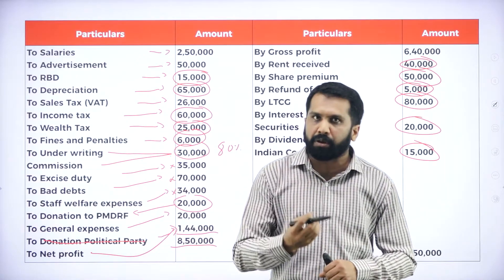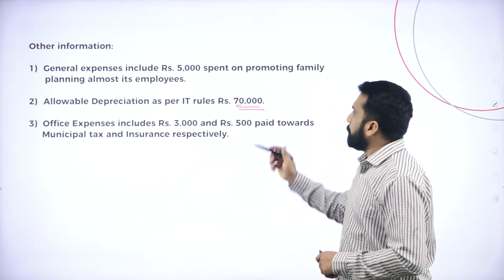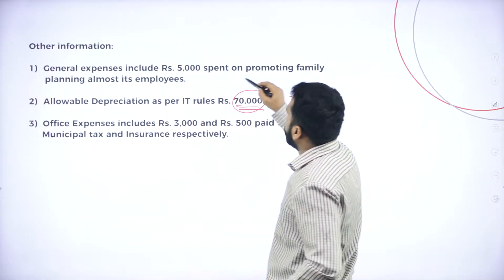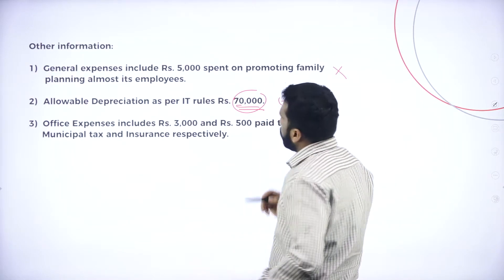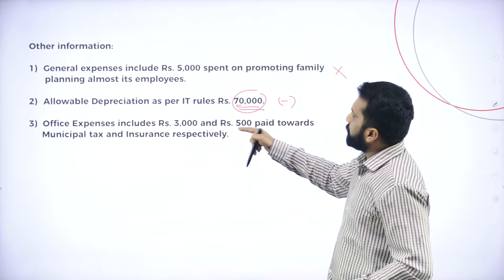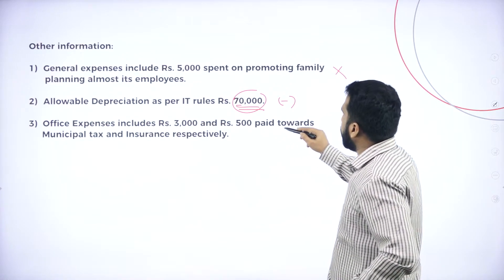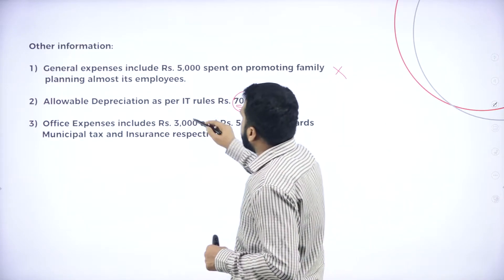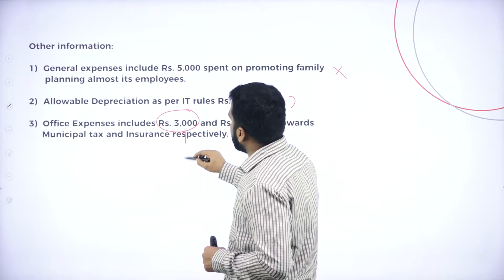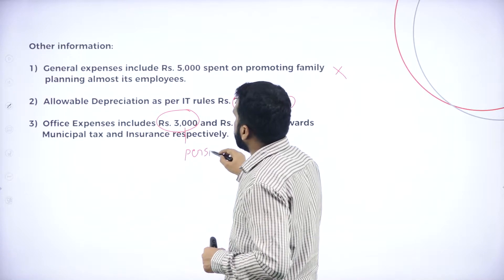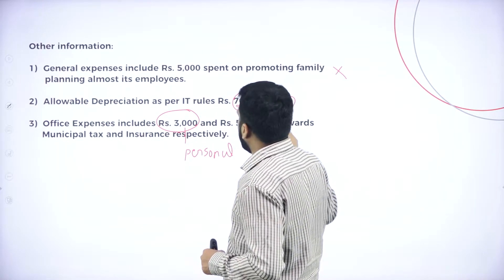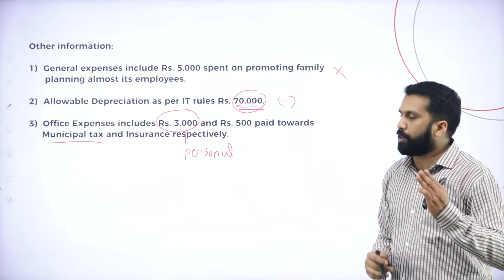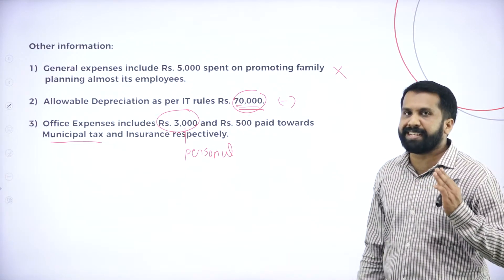Depreciation, as you know, we are supposed to minus. General expenditure — 5,000 spent on promoting family planning, we don't consider. Office expenses include 3,500 paid towards municipal tax and insurance. Insurance is a part of business, but 3,000 is personal — municipal tax. So we are supposed to take only 3,000 out of office expenses.